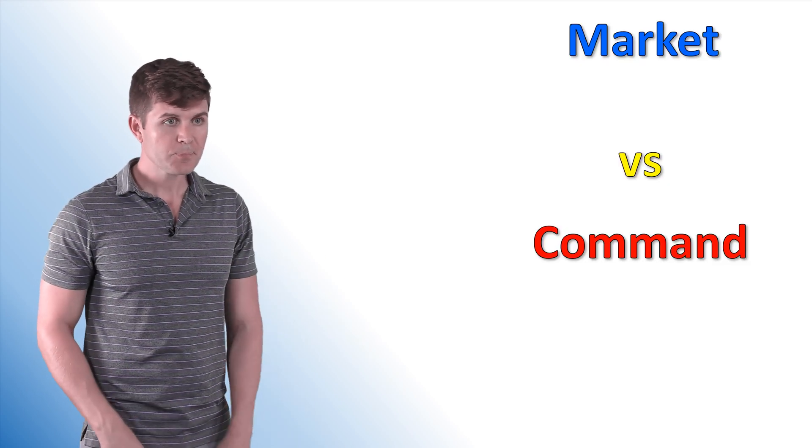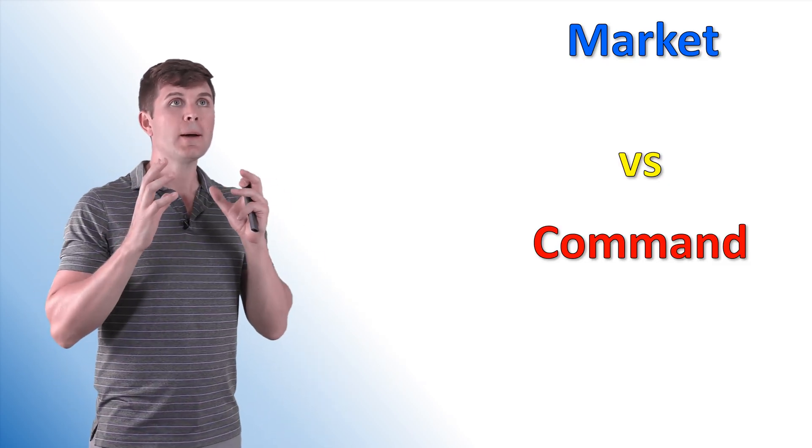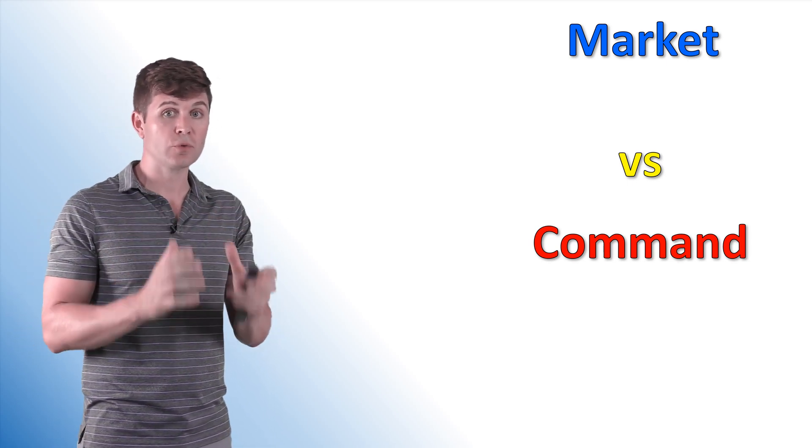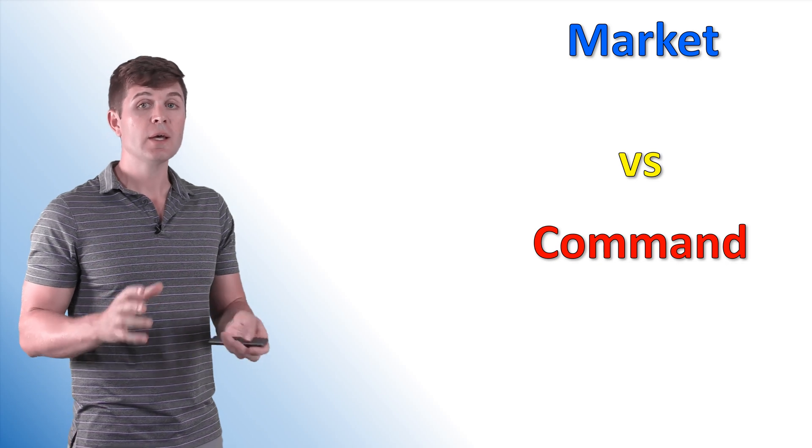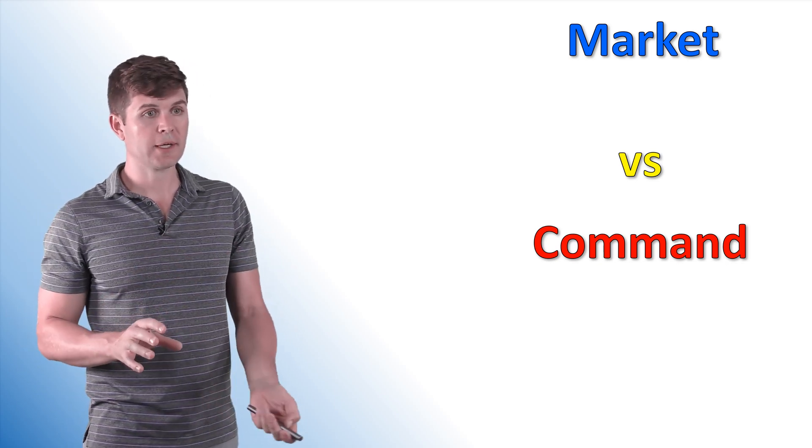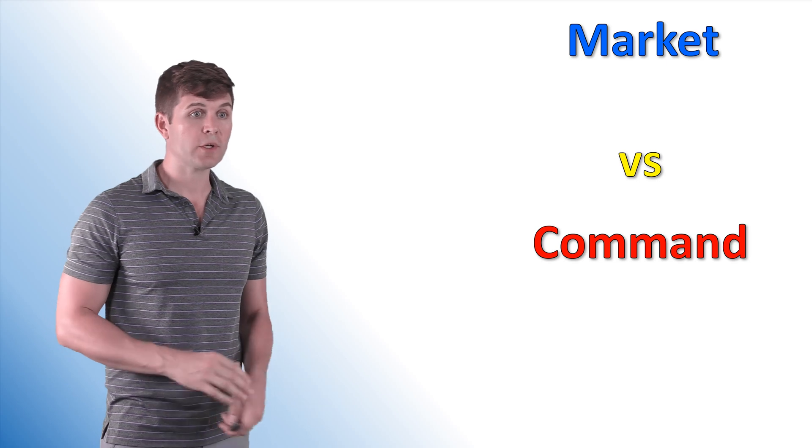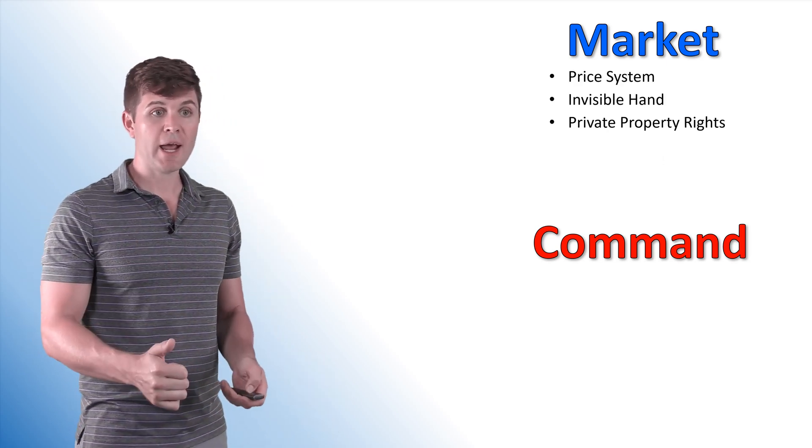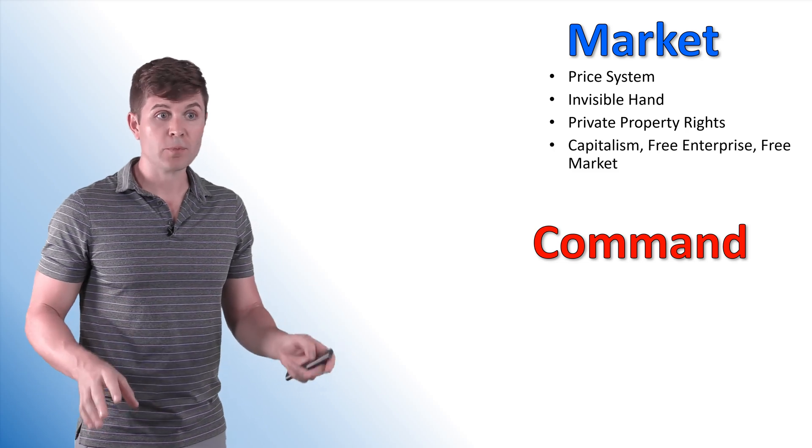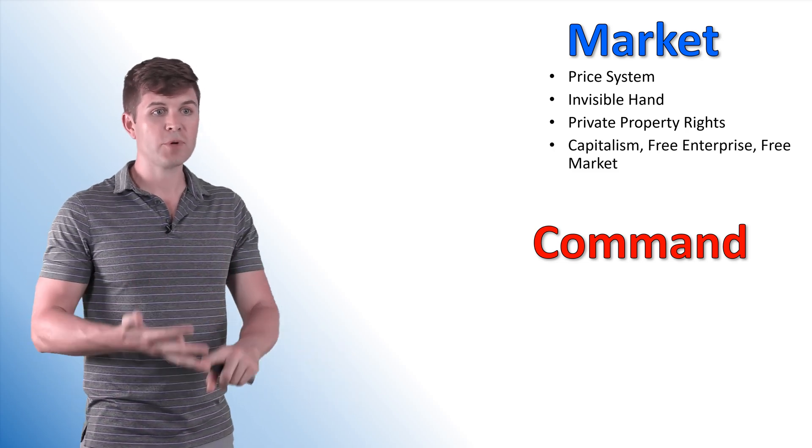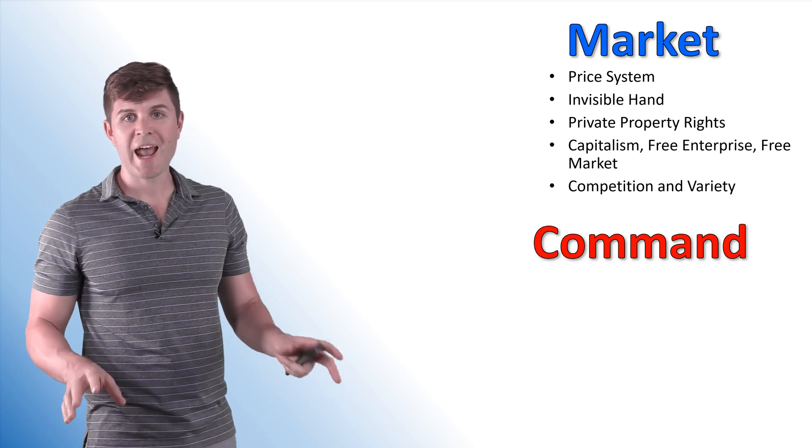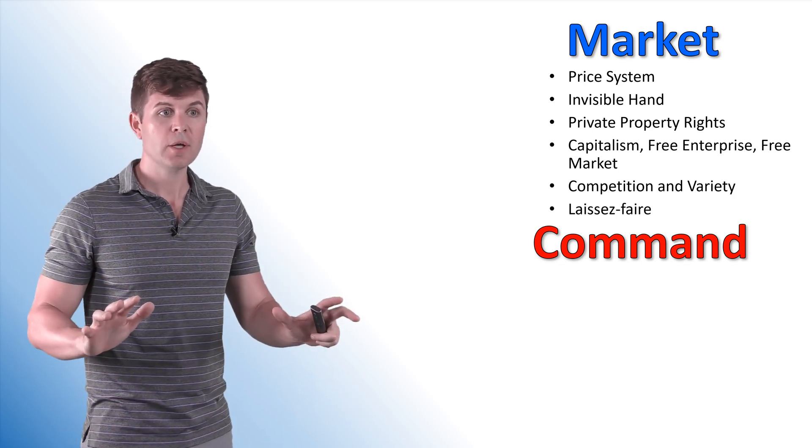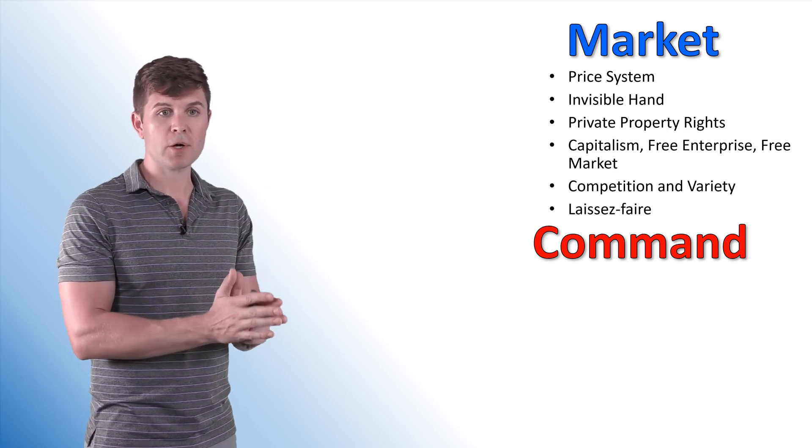All right. Just some things to keep in mind. Now a quick heads up, just the type of terms and descriptors that you might see when somebody's describing a command or a market economy. In a market economy, we're going to see things like price system, invisible hand, private property rights, capitalism, free enterprise, free market, competition and variety, and laissez faire. Hands off. These are all descriptors of a market economy.